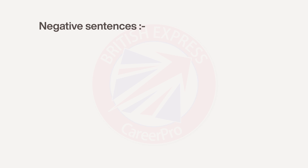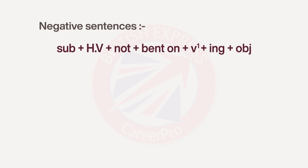We can also prepare some negative sentences — for things we haven't decided to do. To prepare negative sentences, we need a helping verb — is, am, or are — and we put 'not' after the helping verb.